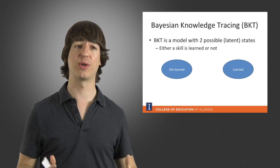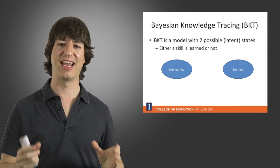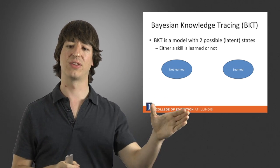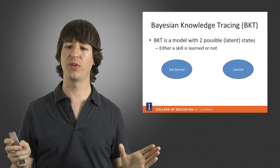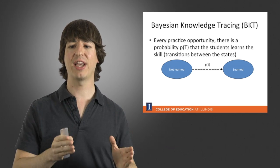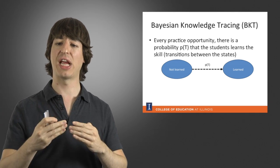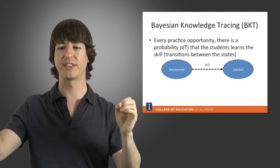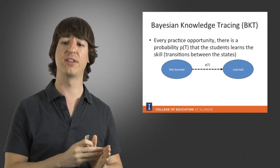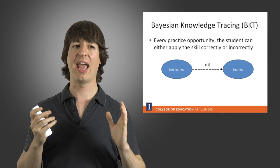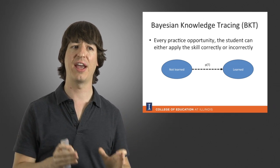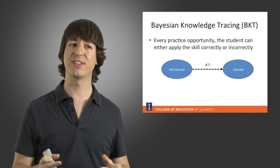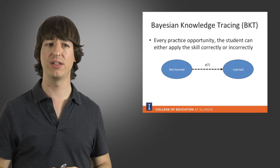Bayesian knowledge tracing is a two-state model. Either the student has learned the skill or they have not — there are only two possibilities. Every time the student practices applying the skill, there is a chance they will learn it, meaning they transition from the not-learned state to the learned state. We say there is a probability P(T) that the student will make that transition. Every practice opportunity, the student can either apply the skill correctly or incorrectly, and because there are two states, there are different reasons why a student might apply the skill correctly or incorrectly.